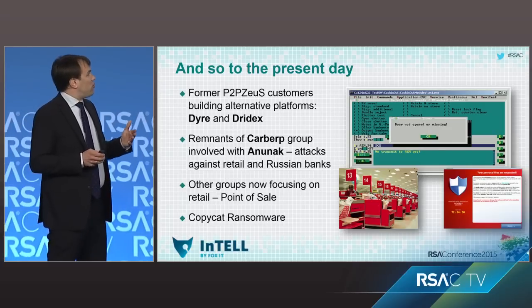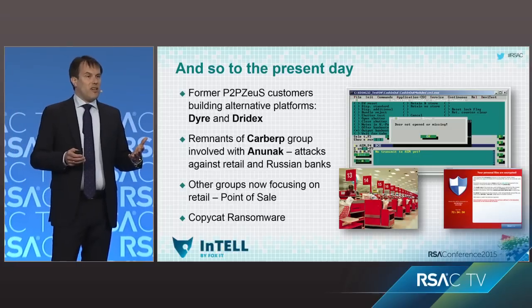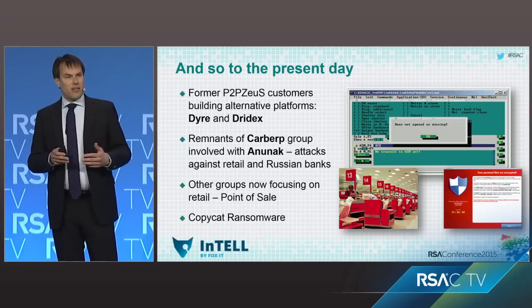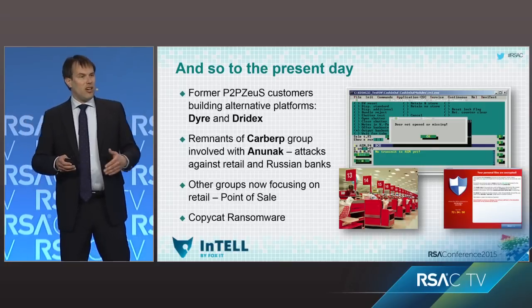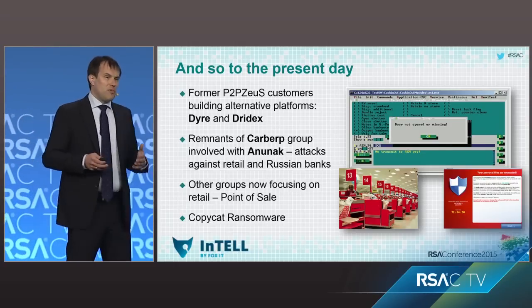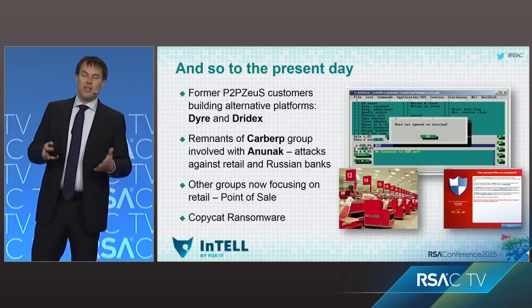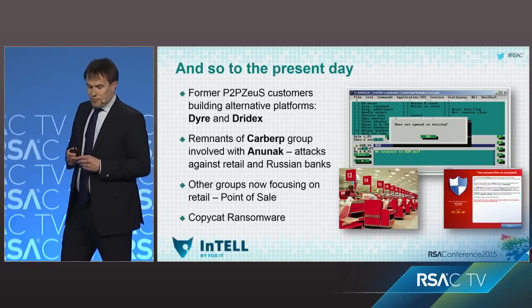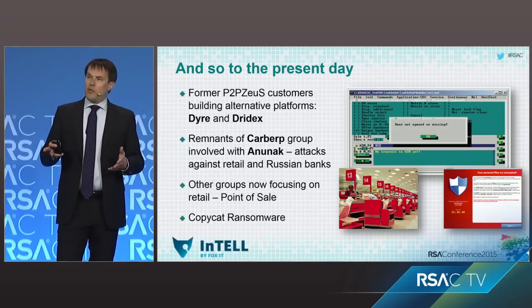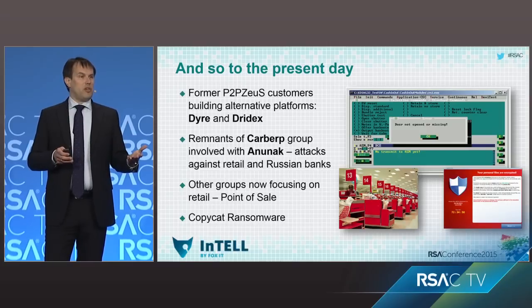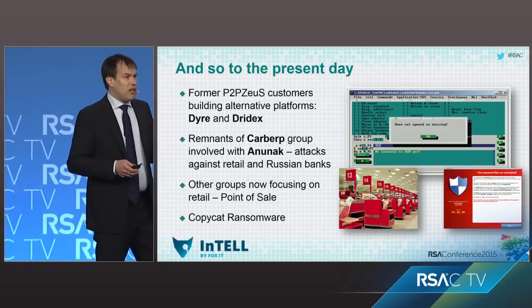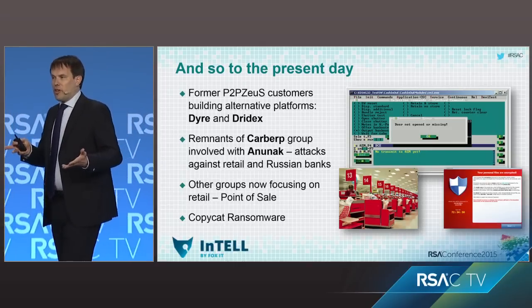Going after point-of-sale terminals is a new tactic that actors in this space have adopted en masse. There is very big interest from criminal actors who used to be involved with online banking attacks in going after point-of-sale systems. Ever since the Target hack, they have woken up to the fact that there's a lot of money to be made stealing credit card data. Another thing they've all woken up to, thanks to peer-to-peer Zeus, is that ransomware is also a good way to earn money. After the peer-to-peer Zeus takedown and the demise of CryptoLocker, we're seeing a lot of copycat ransomware employing those same tactics.